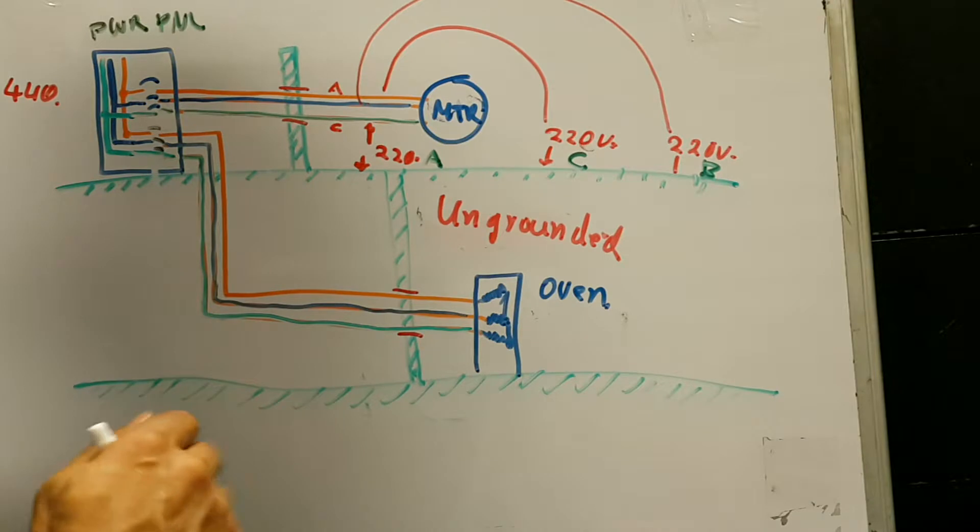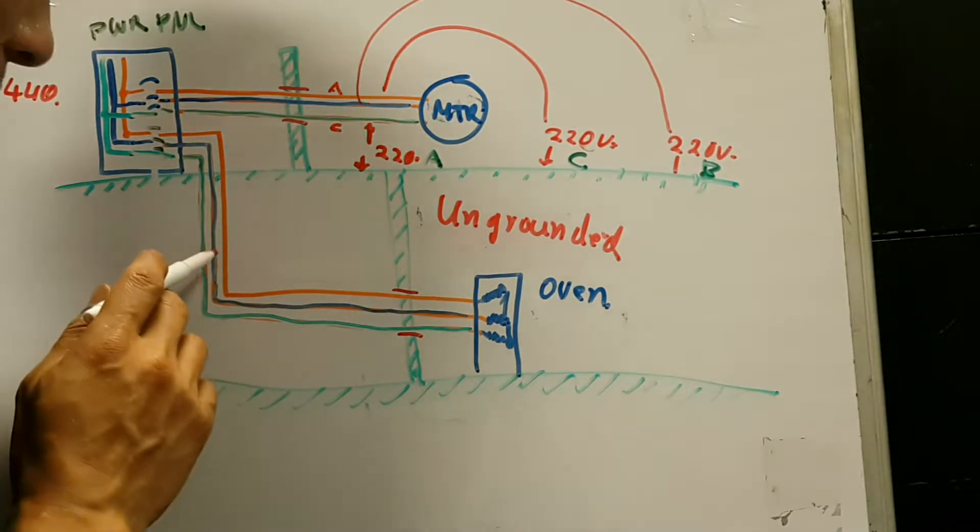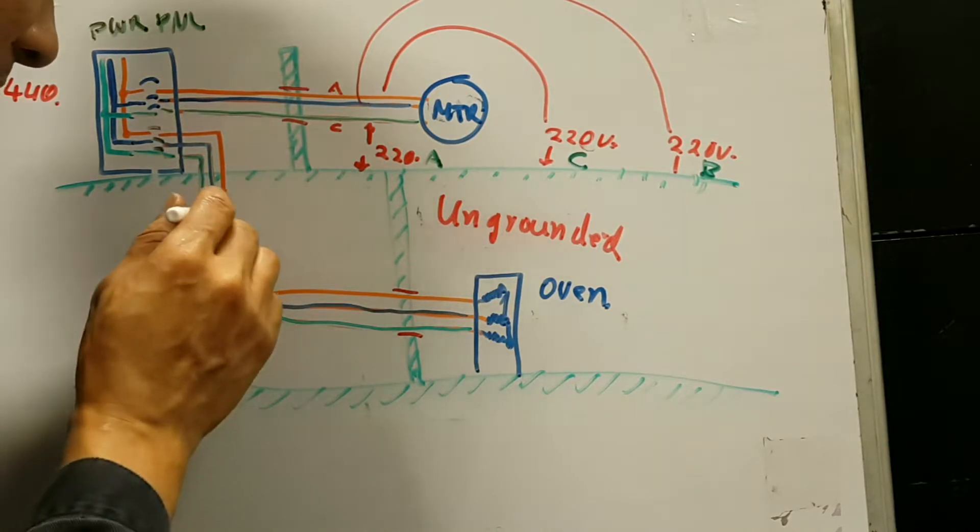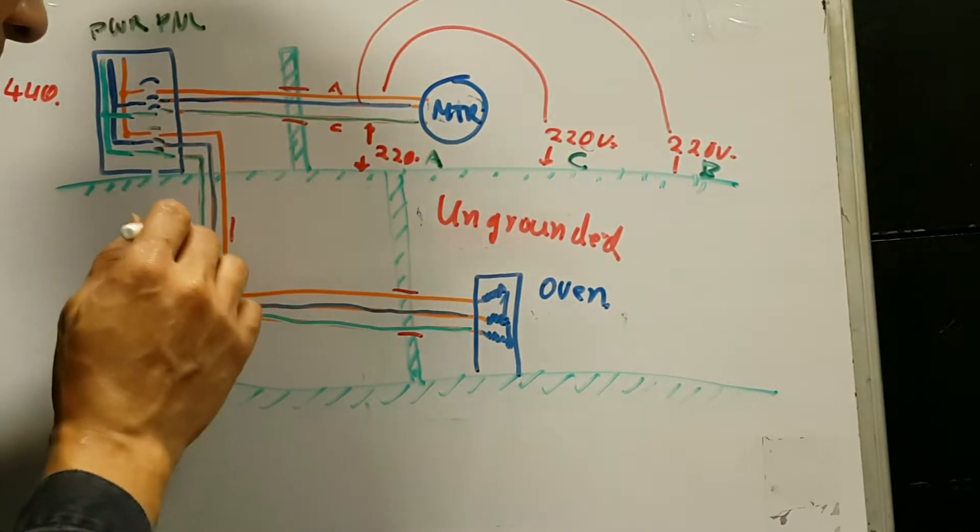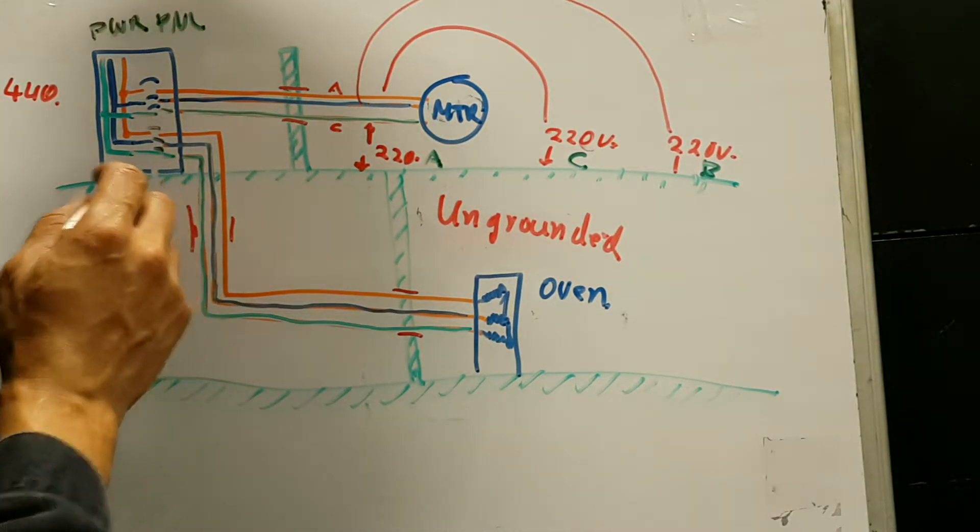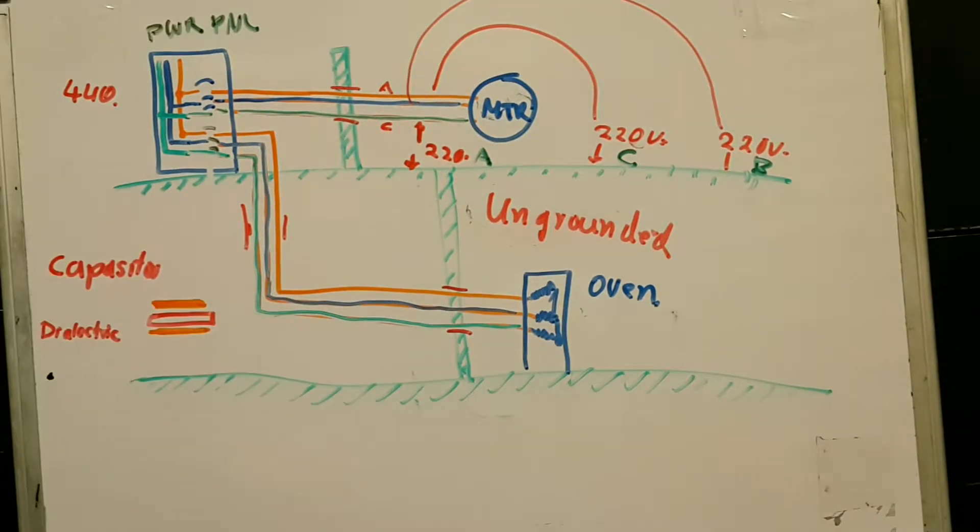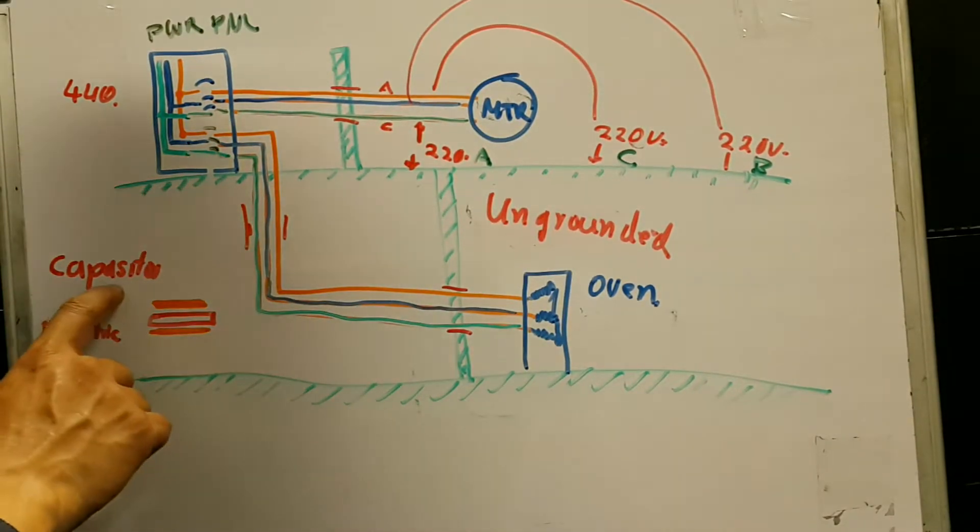there is an induced voltage due to the capacitive effect between the conductor that is inside and the outside of the conductor. There's this plastic, which is an insulator, and then the ship itself is a piece of metal. Remember, when I talk about capacitors,